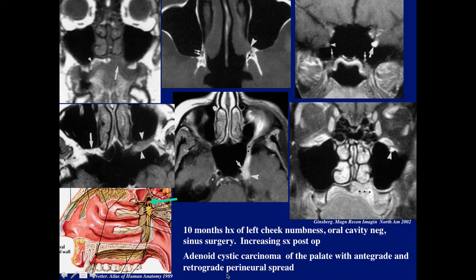If you're not aware of the anatomy: this patient came initially with a 10-month history of left cheek numbness, oral cavity was negative, and he had sinus surgery. Symptoms increased post-op. What was missed — the patient had destruction of the palate, loss of the normal bone, and some erosion of the palatine foramina. By the time the patient came back, the lesion was already in the pterygopalatine fossa, and unfortunately had extended to involve the cavernous sinus, infraorbital foramen, and foramen rotundum.